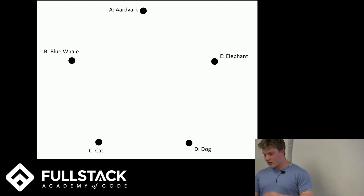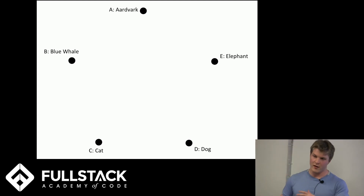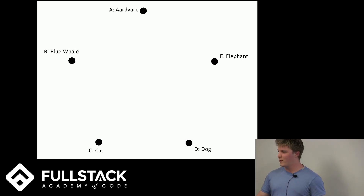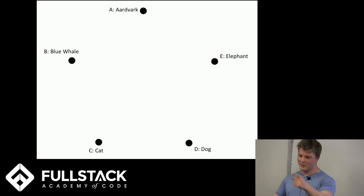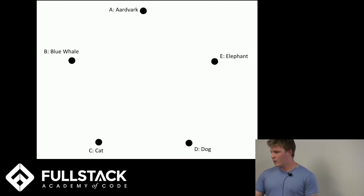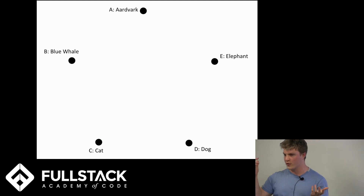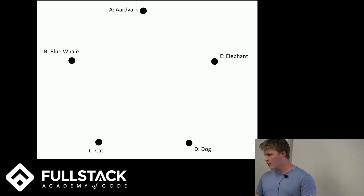We're going to start by doing this with a graph, and then talk about the pitfalls of why this method falls short. We'll represent each group with an edge between five nodes, so each edge connects two animals. Let's count these things.